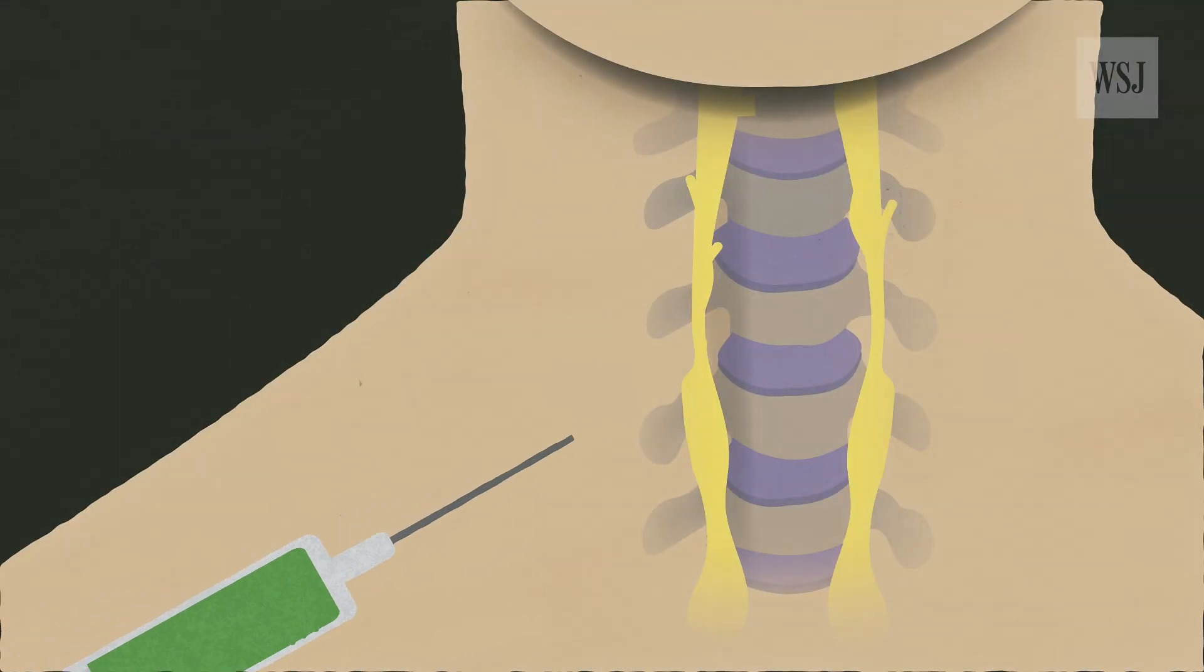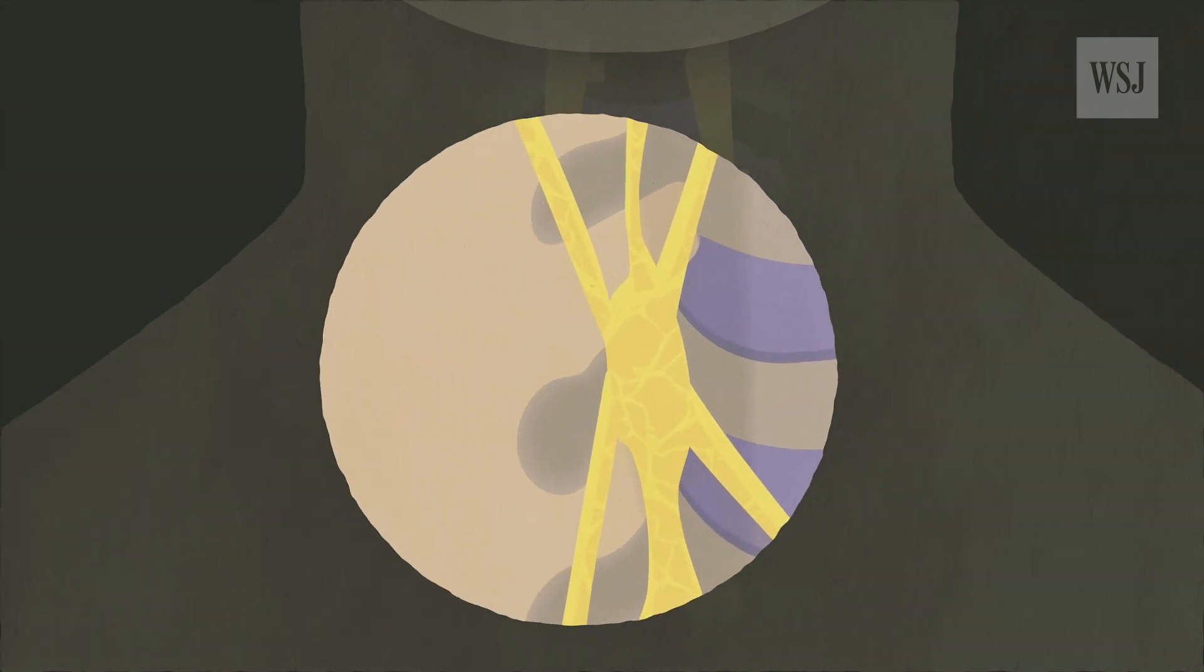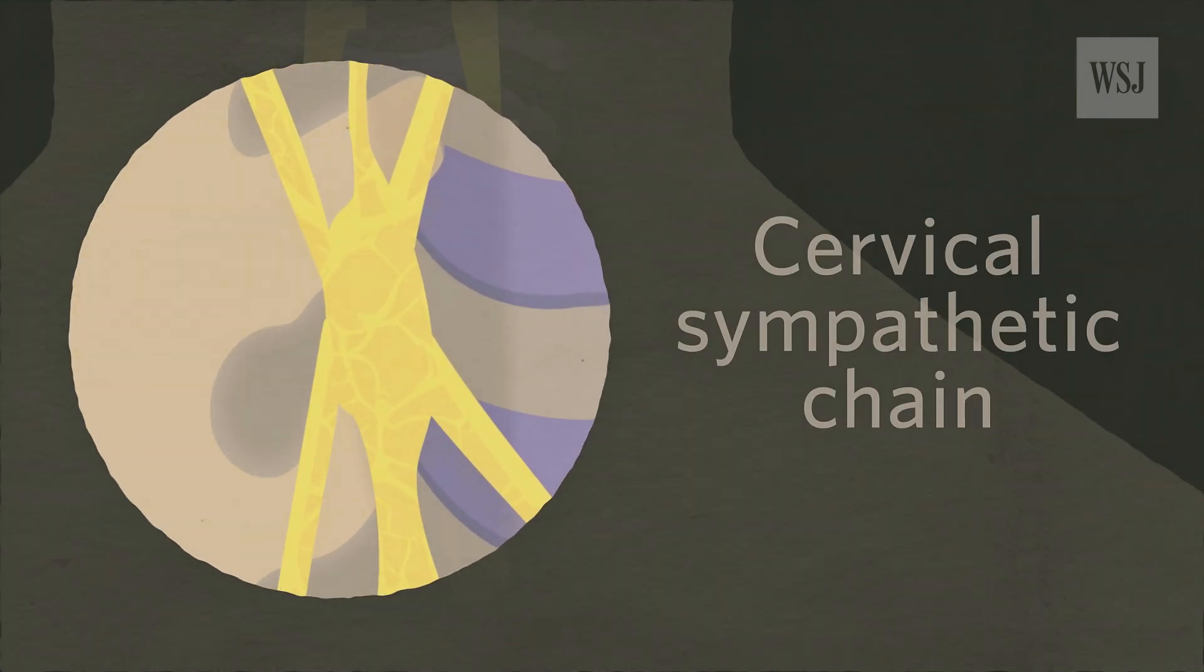In the procedure, doctors inject a local anesthetic into the right side of the neck, guiding the needle to the area around the stellate ganglion, a group of nerves that is part of a bridge between the brain and the body called the cervical sympathetic chain.